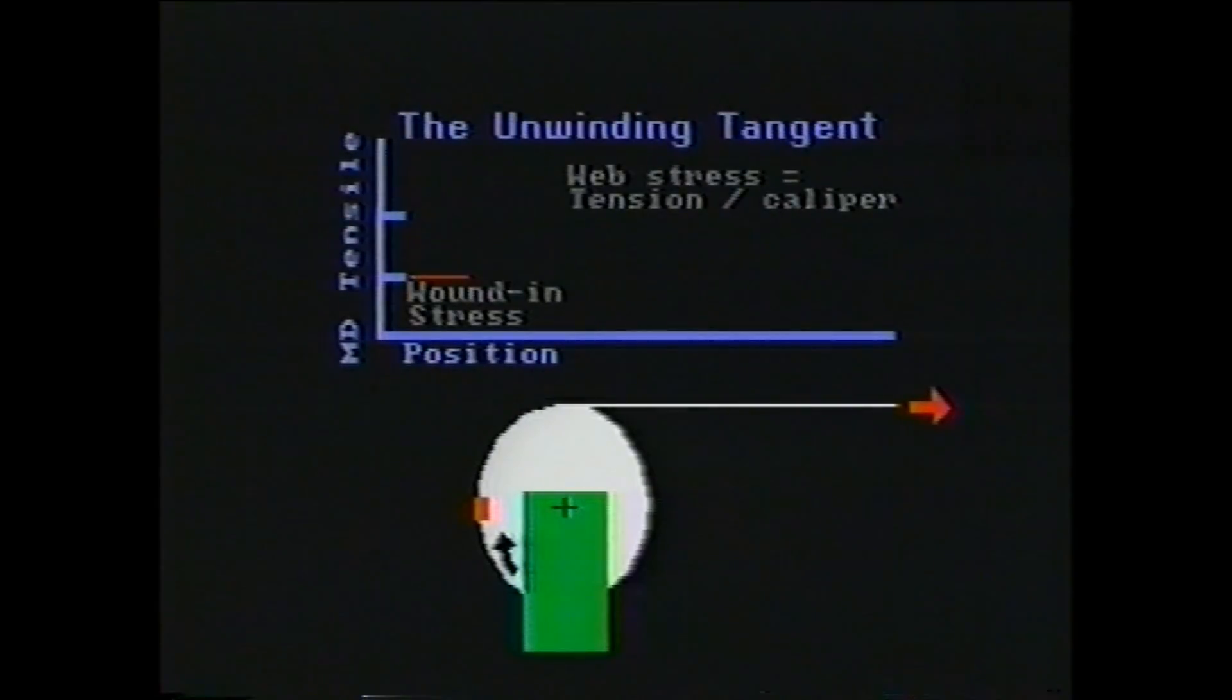As this segment of paper is unwound, it experiences a rapid change in tensile stress as it passes the unwinding tangent into the web run. This is the paper's first real opportunity to break down.